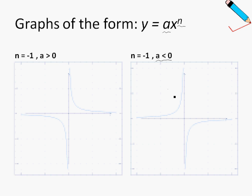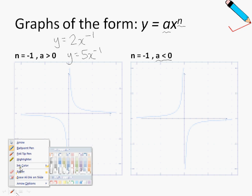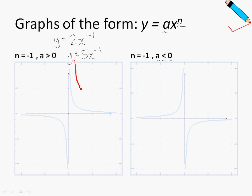The graph has been transformed because the value of a changes from positive to negative. For a tangible example: if a is positive 2 and n is negative 1, the graph of y equals 2x to the power of negative 1 will look like this. If a becomes a bigger number, say 5, then the graph of y equals 5x to the power of negative 1 will look steeper, as shown by the red graph.